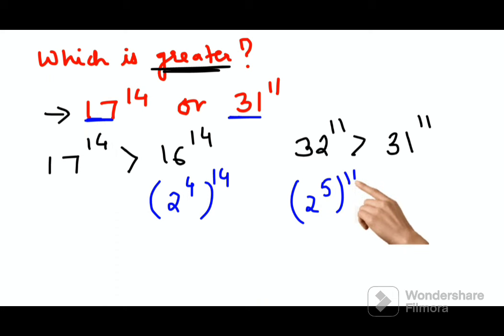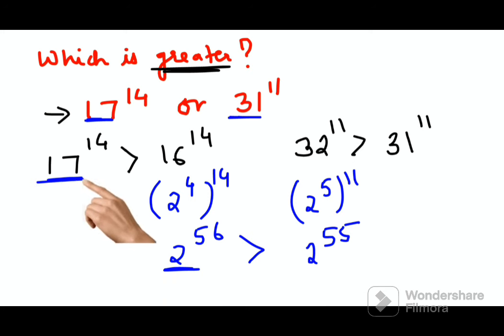So 16 raised to 14 comes out to be 2 raised to 56, and 32 raised to 11 is 2 raised to 55. Out of these two, obviously 2 raised to 56 is greater. And as we know that 17 raised to 14 is obviously greater than 16 raised to 14.